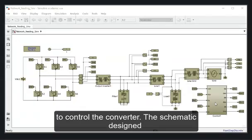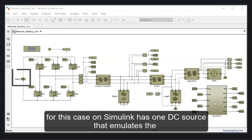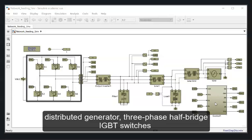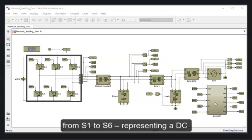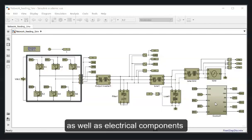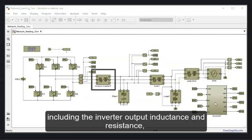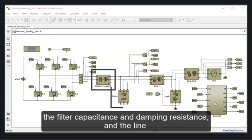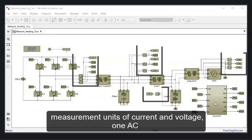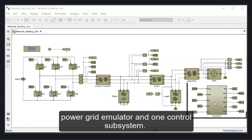The schematic design for this case on Simulink has one DC source that emulates the distributed generator, three phase half-bridge IGBT switches from S1 to S6 representing a DC to AC converter that is operated by controlling a modulating signal, as well as electrical components including the inverter output inductance and resistance, filter capacitance and damping resistance, and the line inductance and resistance. Besides, one local load, measurement units of current and voltage, one AC power grid emulator, and one control subsystem.